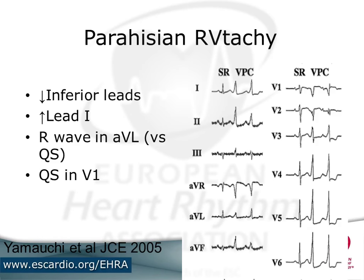Something that is clinically relevant is the identification of parahissian right ventricular origins, because that increases the complexity and risk of the procedure. Parahissian origin tends to produce a slightly less positive inferior lead because the origin isn't as high on the outflow tract — lead three isn't as positive, lead one tends to be more positive as it's closer to the right arm, and there tends to be a QS appearance in lead V1.